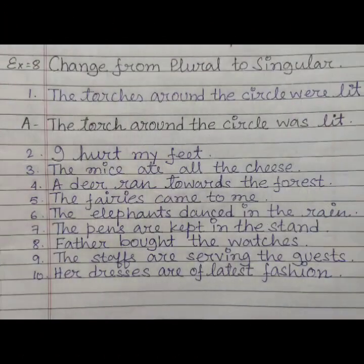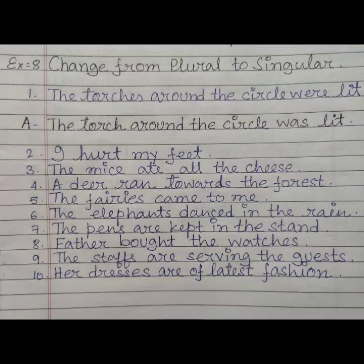Next exercise is exercise number 8: Change from plural to singular. Number 1: 'The torches around the circle were lit.' The answer is: 'The torch around the circle was lit.' So number 1 is done for you. 2. I hurt my feet. 3. The mice ate all the cheese. 4. A deer ran towards the forest. 5. The fairies came to me. 6. The elephants danced in the rain. 7. The pens are kept in the stand.